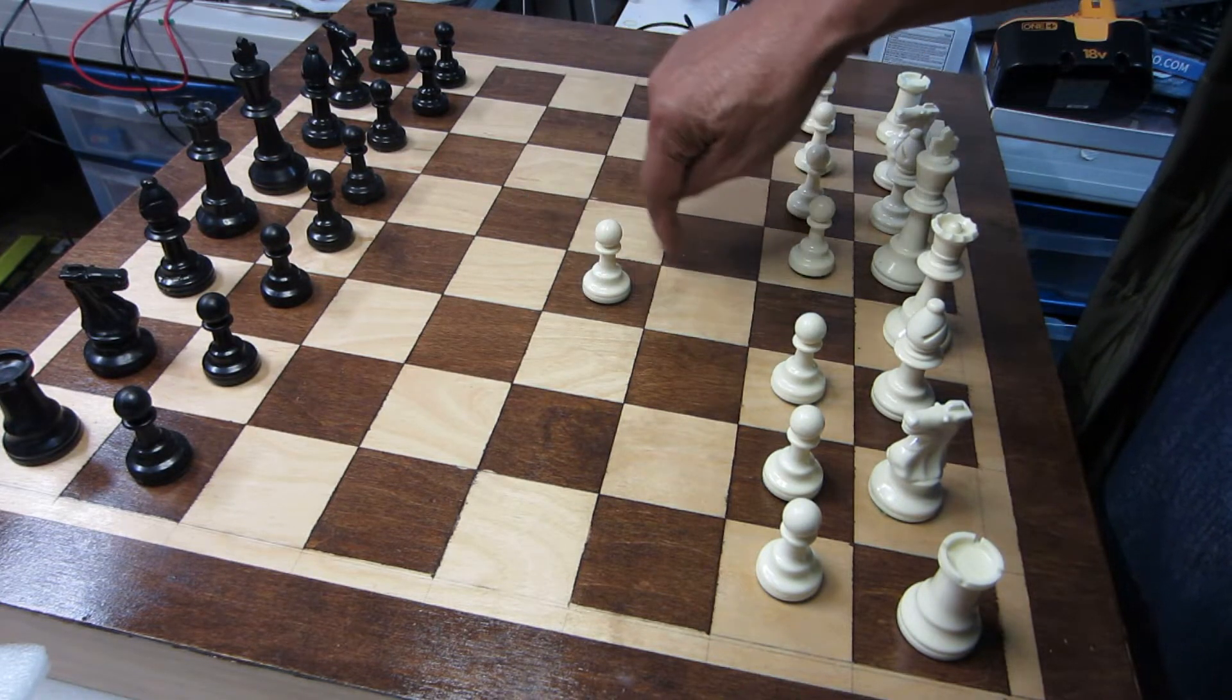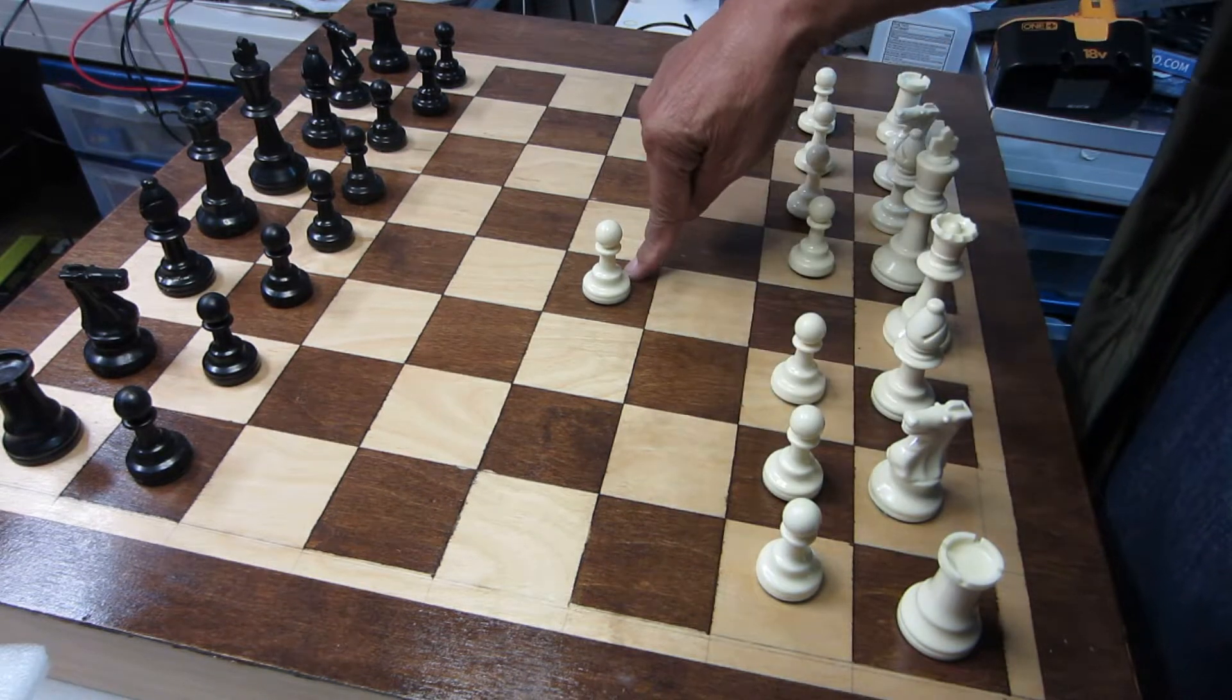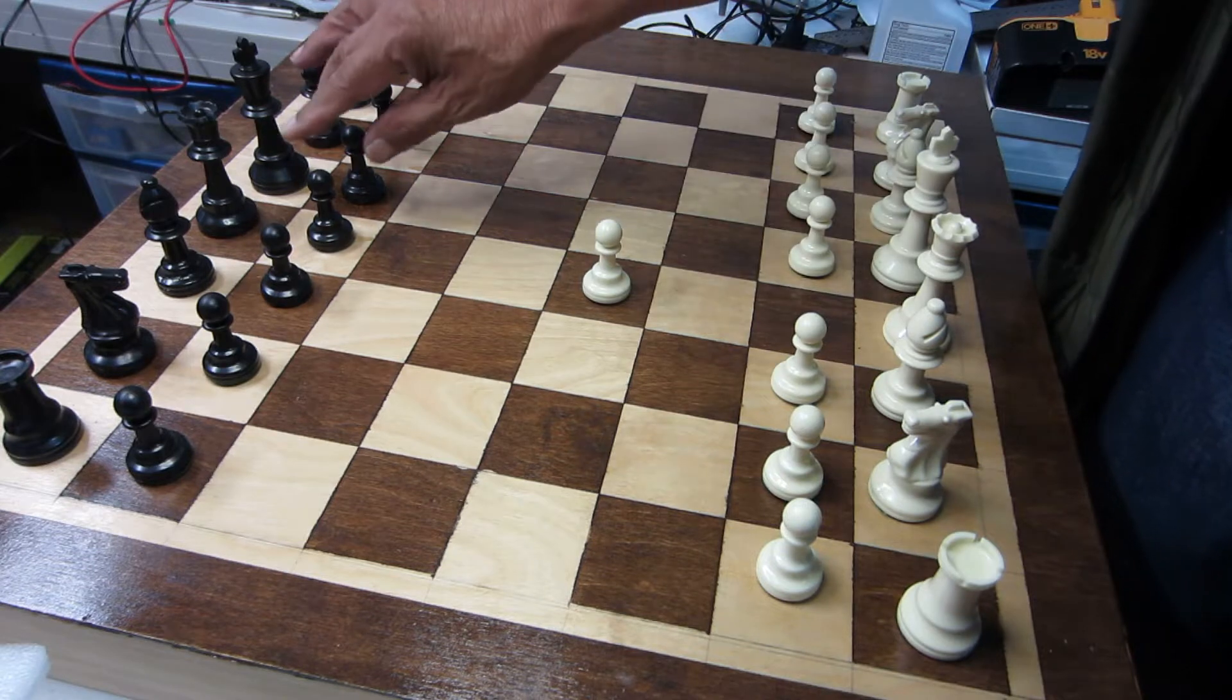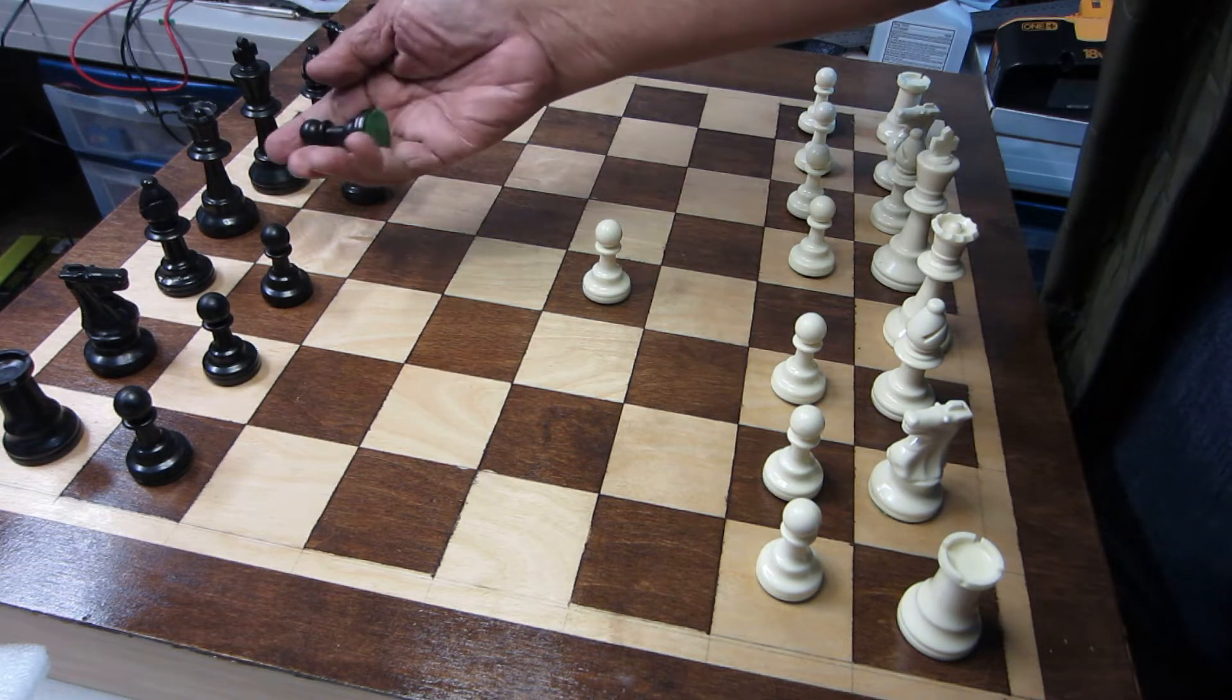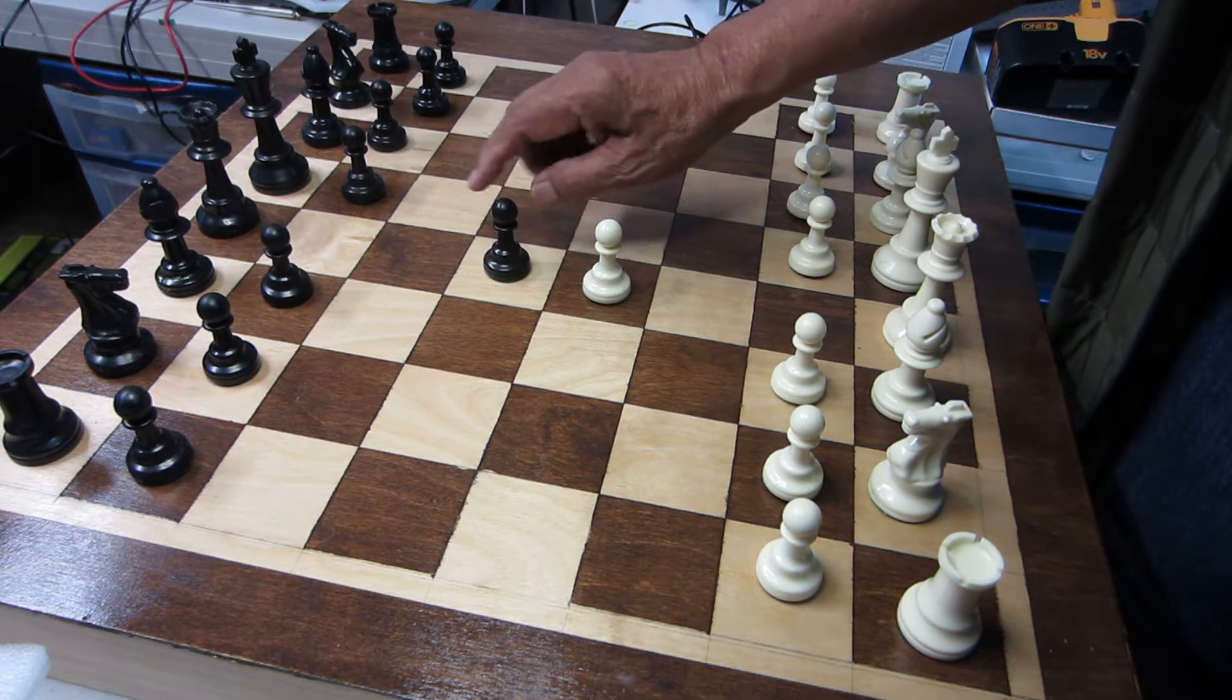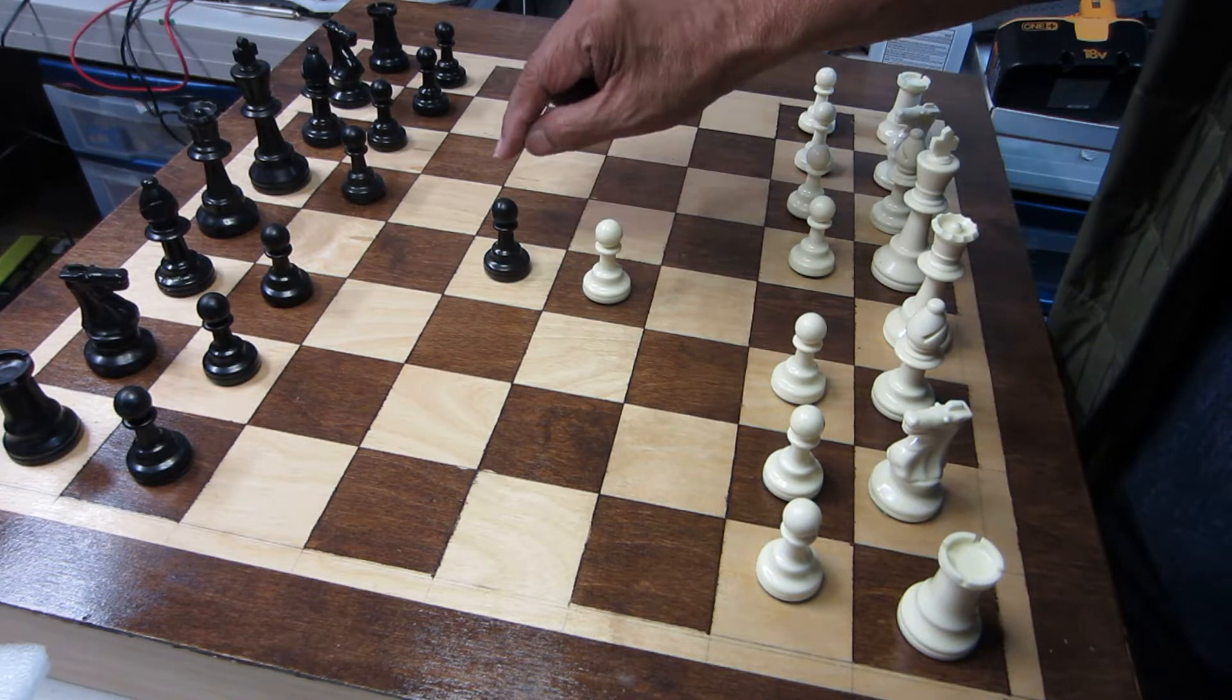So now the computer records that there is a white pawn on e4, or d4 I should say. And this response will do likewise: a lifting causes an interrupt telling the computer that the pawn was lifted.